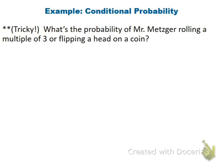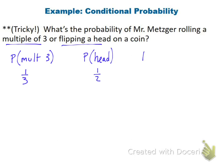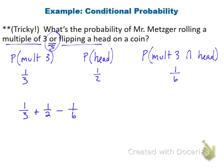The last problem — which was on the practice test — is a regular 'or' equation: probability of rolling a multiple of three or flipping heads. Probability of a multiple of three is one-third, probability of heads is one-half, and both happening is one-sixth. So we do one-third plus one-half minus one-sixth, which gives us two-thirds, or 66.7%.